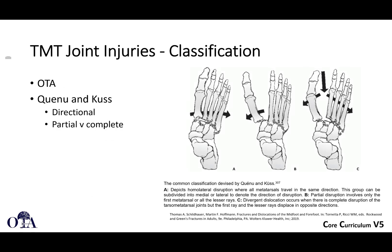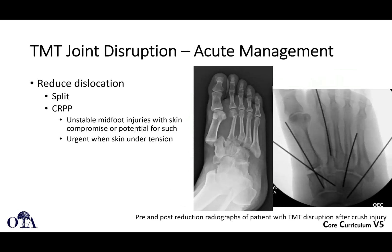There are some classifications for Lisfranc injuries. The OTA classification uses the Quenu and Kuss classification, where you have homolateral or divergent dislocation patterns, looking at the direction of displacement. That can be helpful to describe what you're seeing.